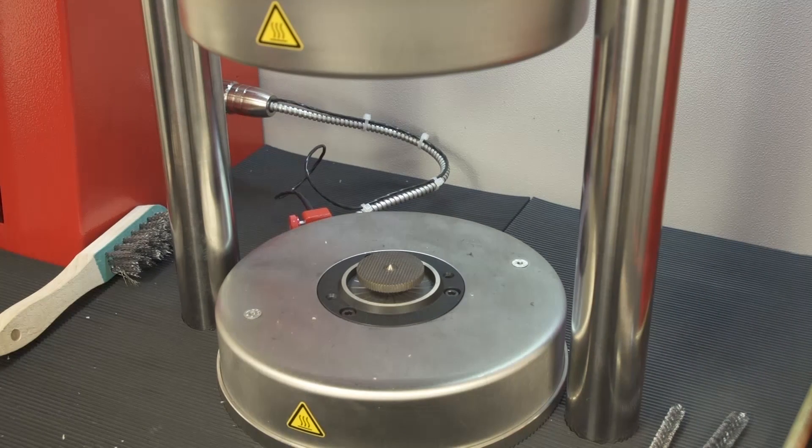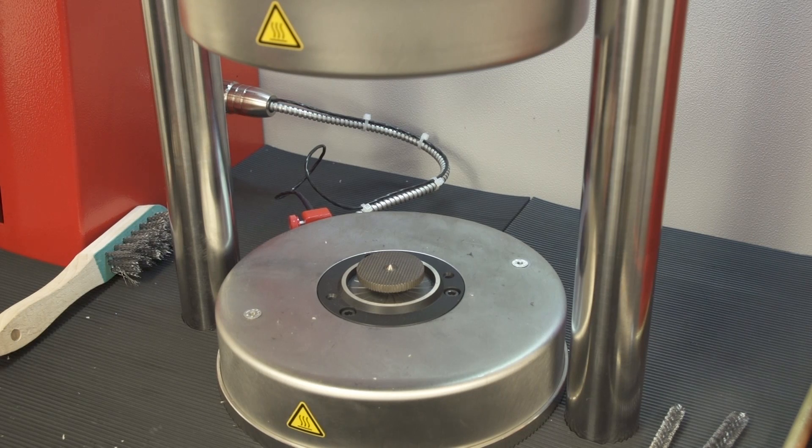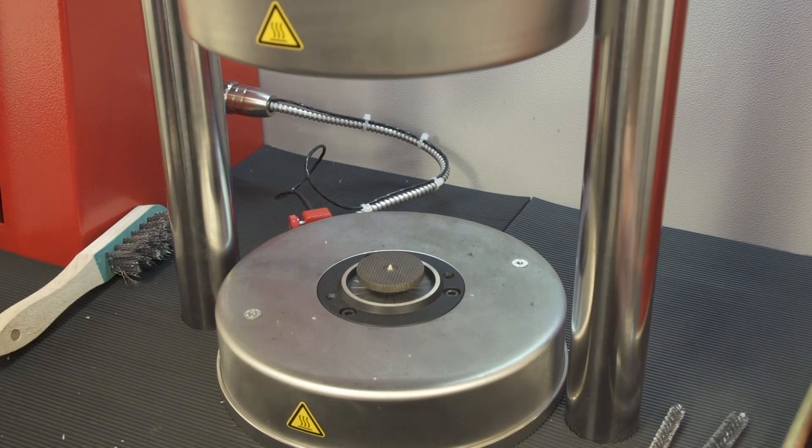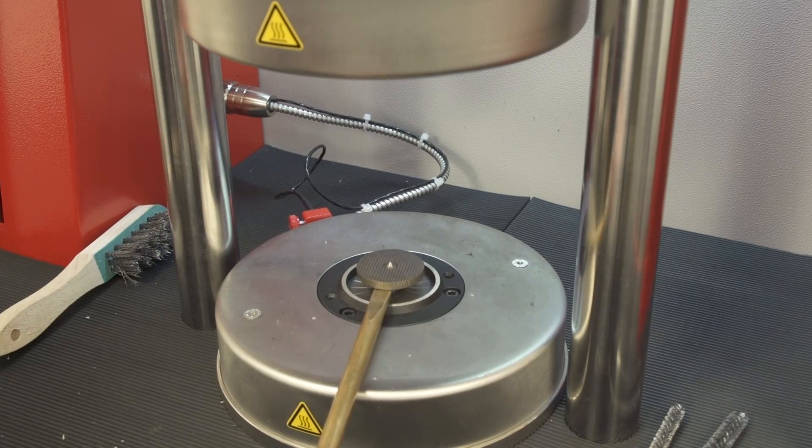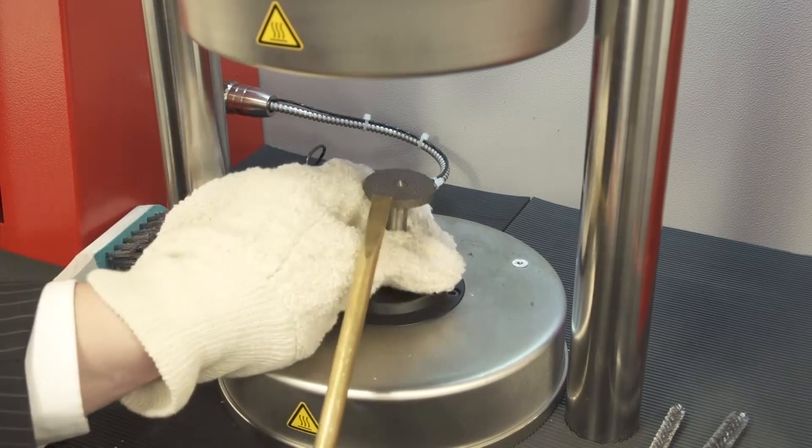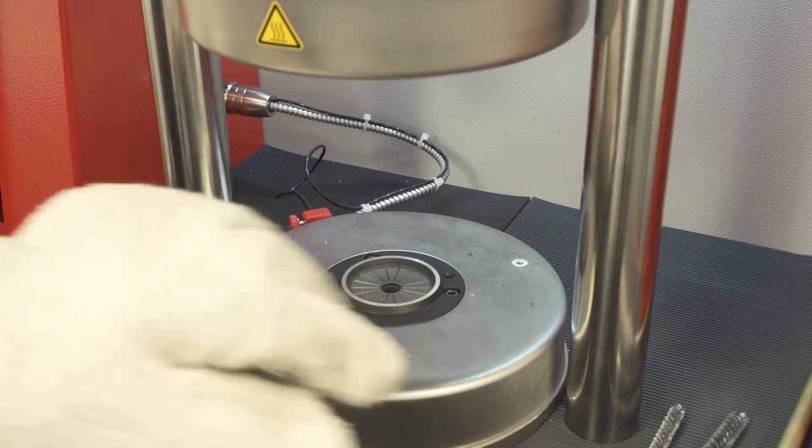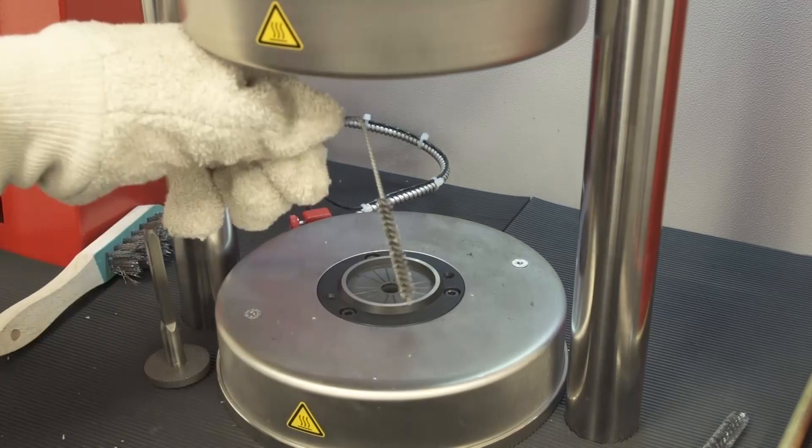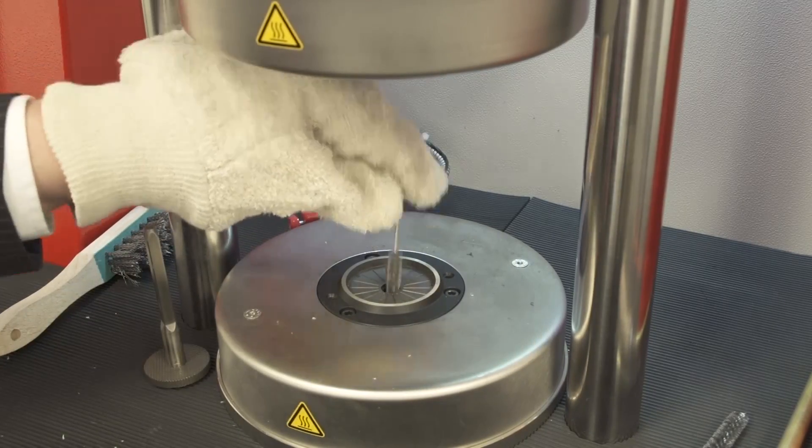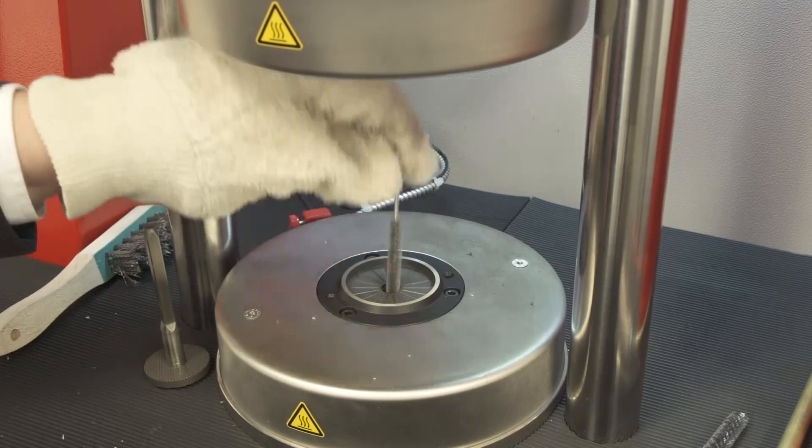From time to time, at least after every tenth test, a cleaning of the rotor shaft is recommended. Remove the rotor from the die and use the provided wire brushes to clean the rotor shaft and remove any material residue from the die area.